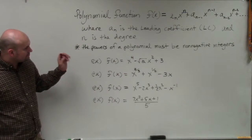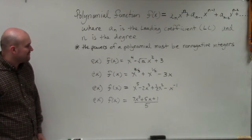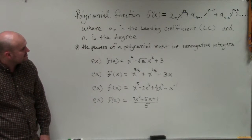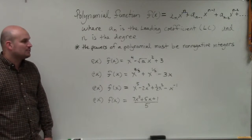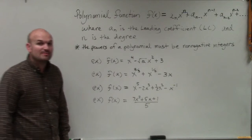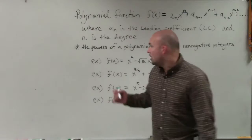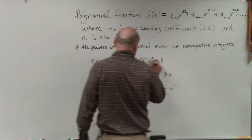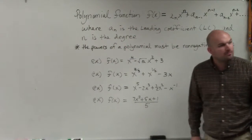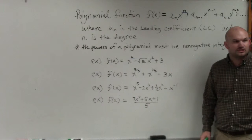so here we have, we have f of x equals x to the fourth minus square root of 2 x squared plus 3. So if you're going to determine if this is a polynomial or not, all you simply need to do is go by inspection and look at your powers. Are your powers non-negative integers?